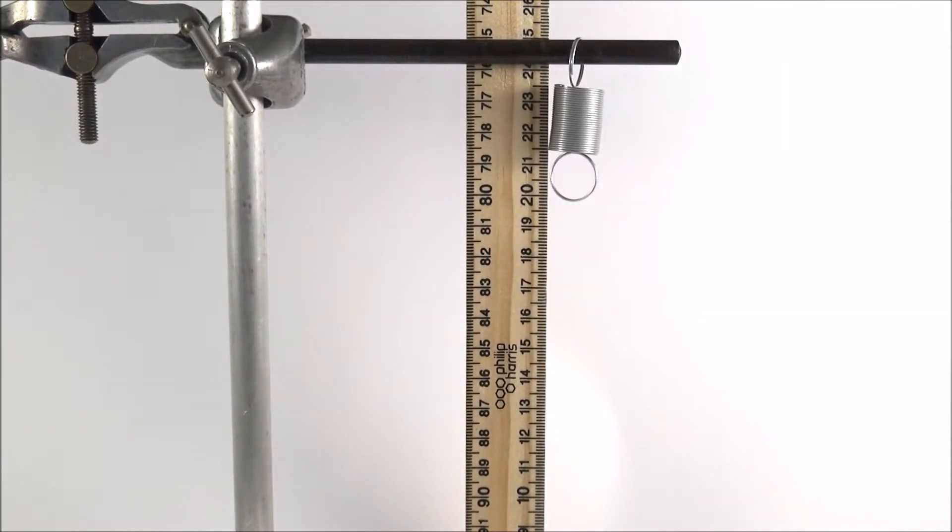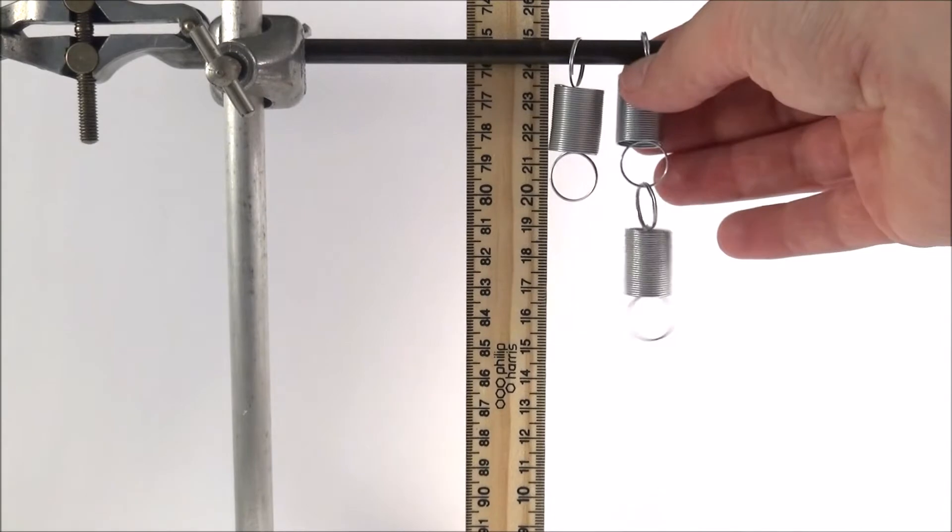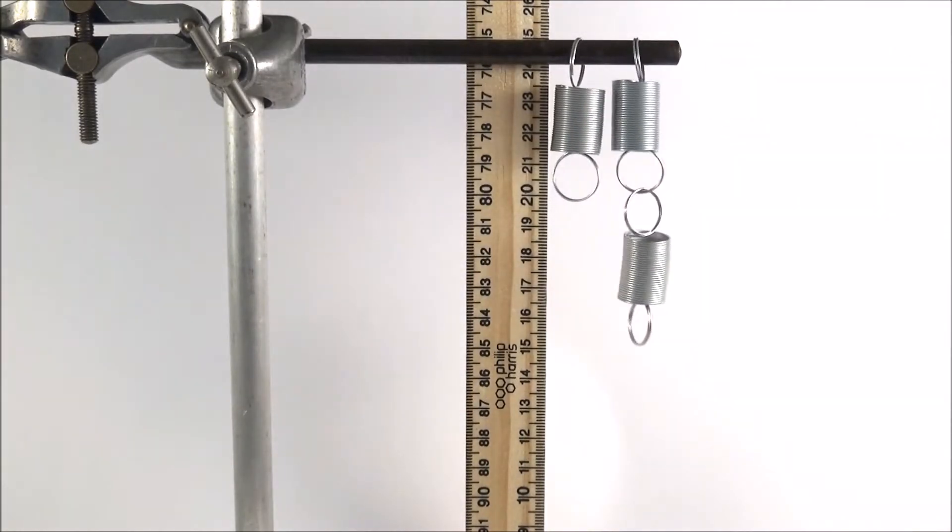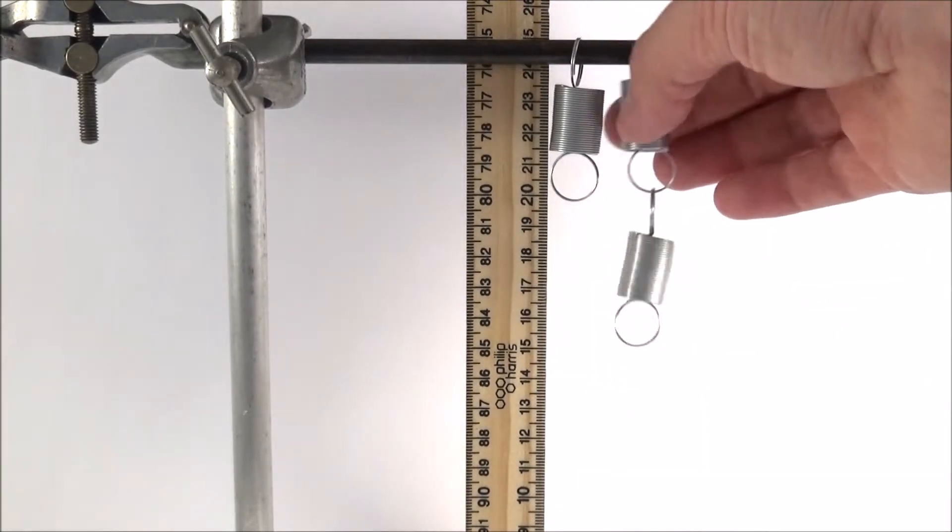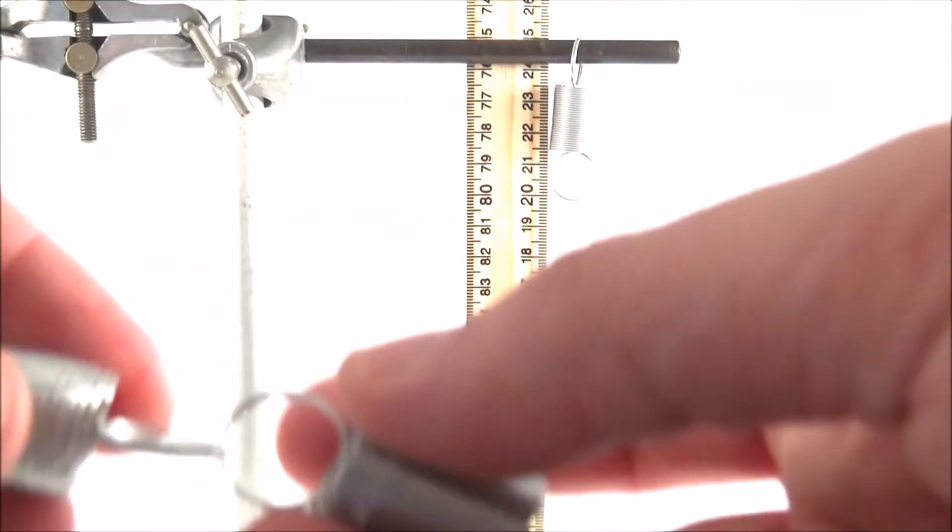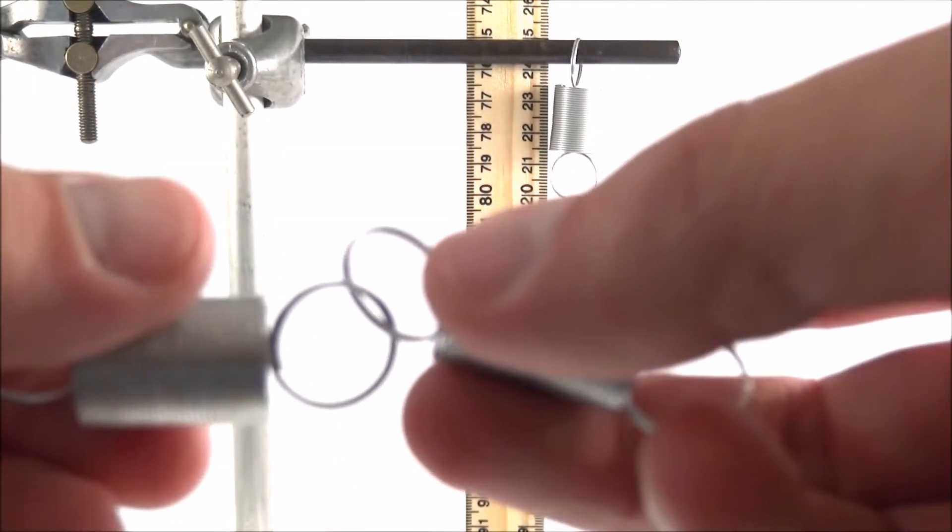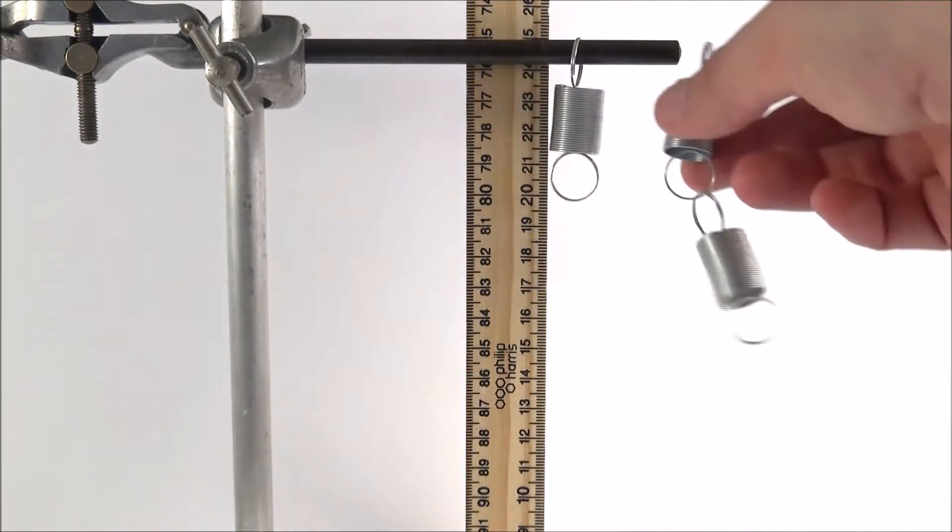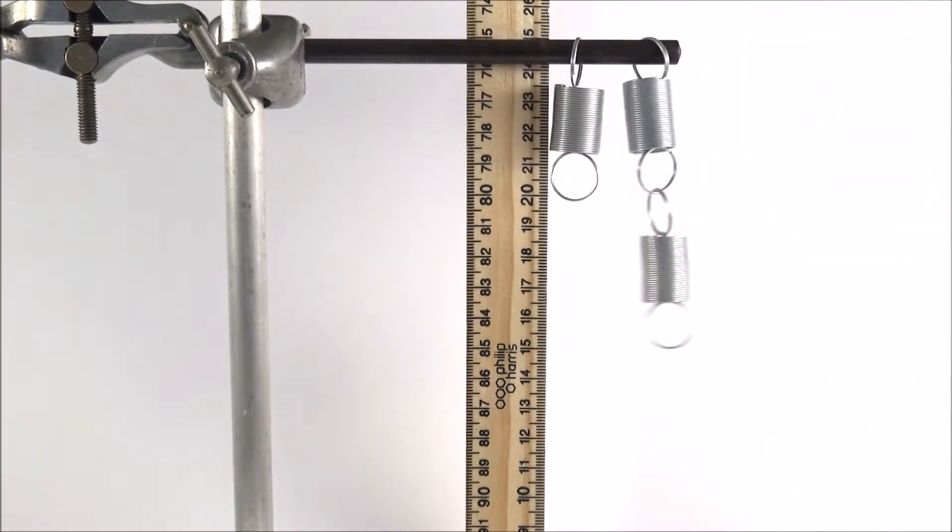The first experiment that you can do is maybe looking at the extension of springs in series. All these ones do, a bit like trying to get keys on your key ring, all you need to do is just kind of join the two ends together and you can just keep extending up to five, six springs, however many you want.